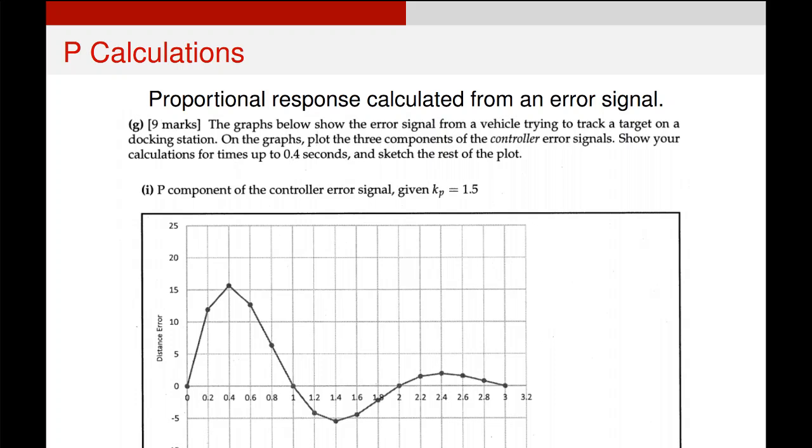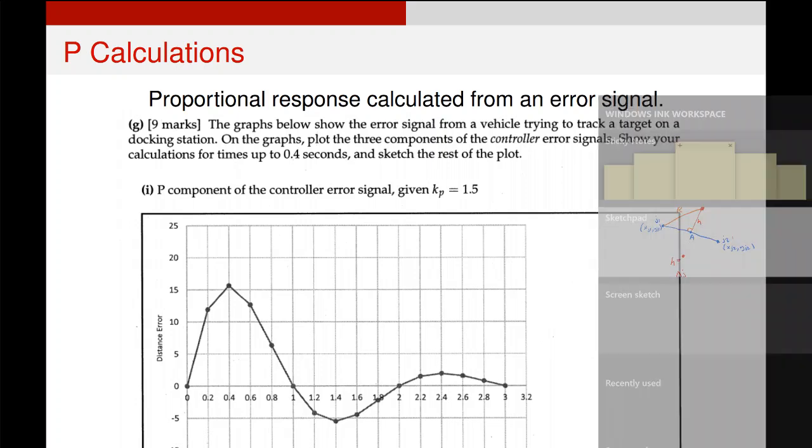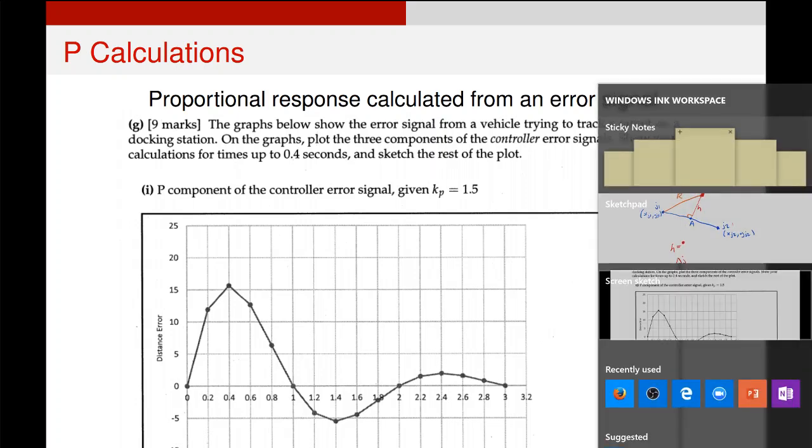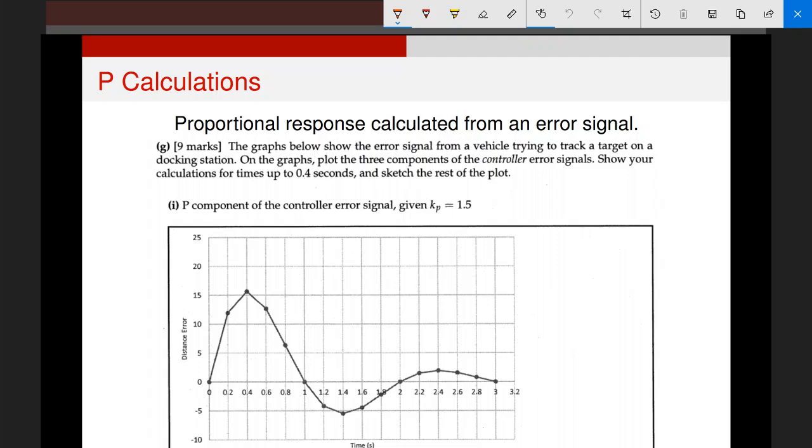Let's start with proportional. So here's an example exam question from a couple of years ago. We've got an example error signal coming out on our graph and we've been asked to calculate what the proportional component of that error signal is given a value for Kp. Now doing that is actually very simple so let's go through and do it. Essentially what we're going to do is we're going to look at each point and we're going to calculate the error component at that point.